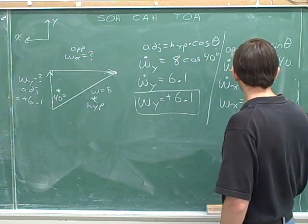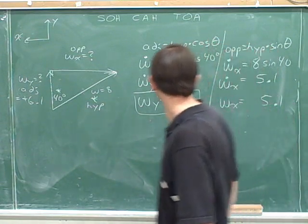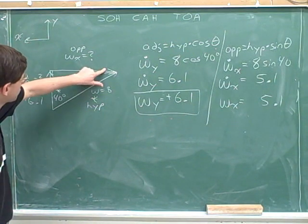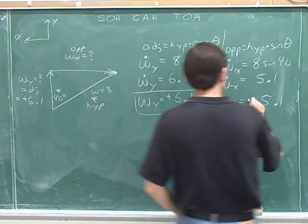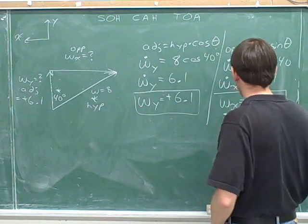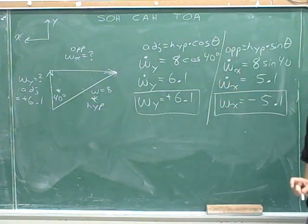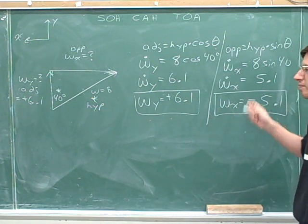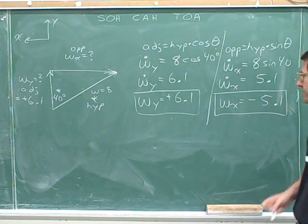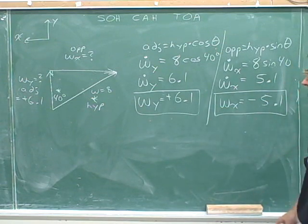And now I'm going to write W sub X without the dot to show that I'm finding the sine component. W sub X was pointing to the right, but that's the negative direction. W sub X should be negative. Remember that if you didn't get the sines right, you didn't get the problem right. It's not good enough to get the magnitudes. You've got to get the sines as well. Indicate the positive sign as well as the negative sign.